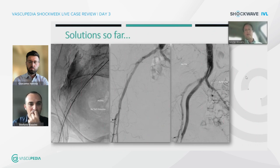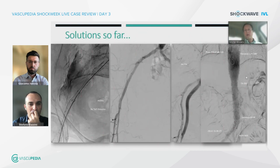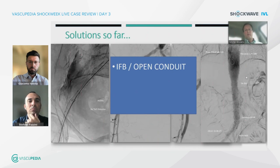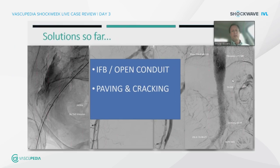A second time, we had to finish with the BVAR branched endograft. So we have the possibility to perform an iliacofemoral bypass or an open conduit, or this kind of paving and cracking technique by implanting a covered stent graft, where sometimes you inadvertently close your internal iliac artery as well. That's not good, especially if you're treating thoracoabdominal aortic aneurysms, because you need them for avoiding the risk of spinal cord ischemia. You can also do endoconduits.